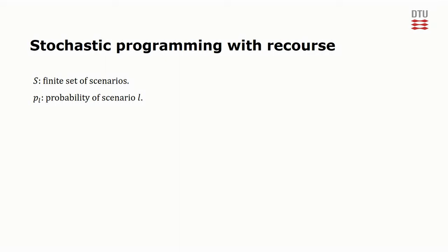In order to write up the stochastic program with recourse, we first need to introduce a version of the x2 vector for each of the scenarios. We refer to these as x2l for l in S.